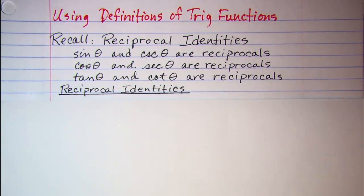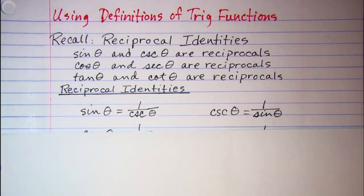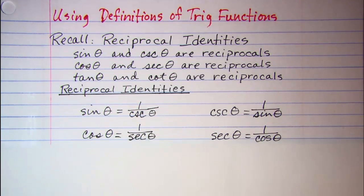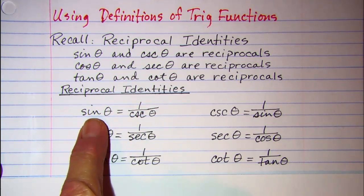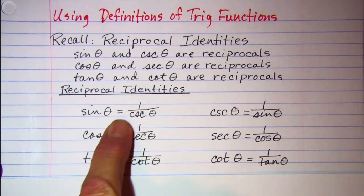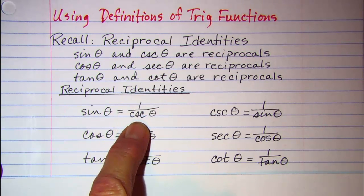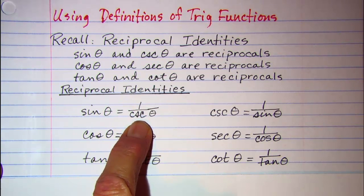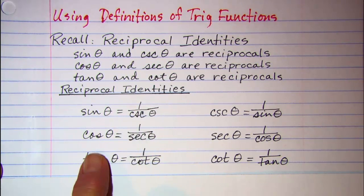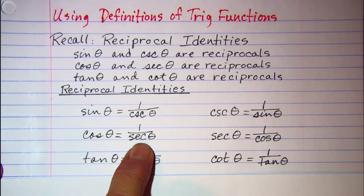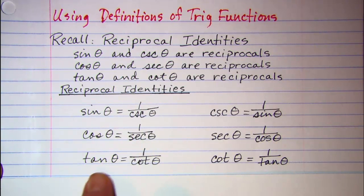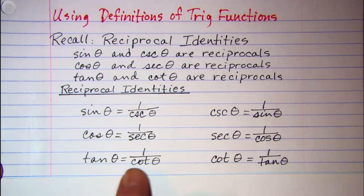So then we have our identities. Sine is equal to 1 over cosecant theta. Cosine is 1 over secant theta. Tangent is 1 over cotangent theta.